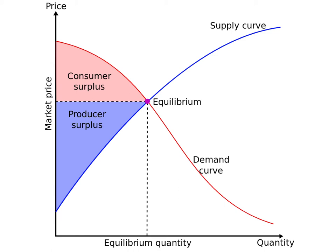If we charge more than the equilibrium price, producers might get additional profit, but consumers would lose consumer surplus and the overall benefit would drop. In a robust, idealized market, many producers and consumers come together and find the equilibrium price, which is where the marginal cost of producing the last unit equals the marginal benefit to the consumer of purchasing it — and that point is the equilibrium price.